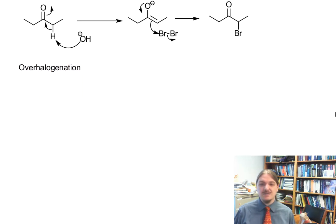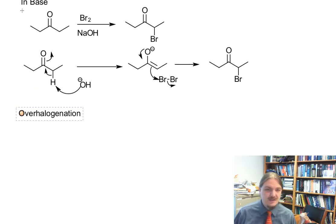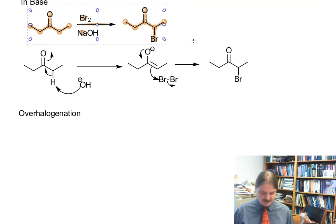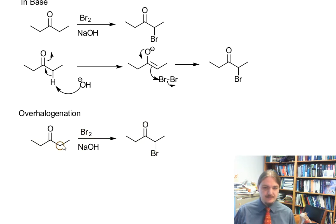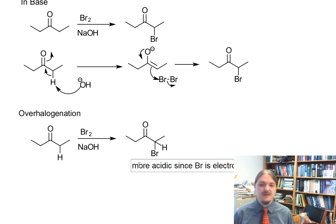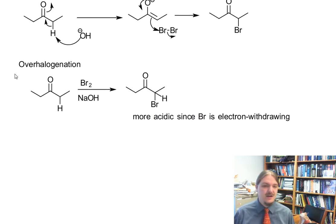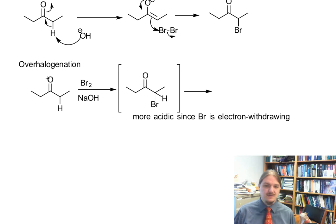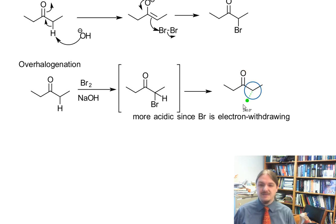There is a concern with this variation, and that is overhalogenation. If we look at our initial reaction, we have a bit of trouble in that the product is more acidic since bromine is electron withdrawing. That means it is very difficult to avoid overhalogenation, and if it occurs, it's going to occur on the same position, so the second bromine ends up on the same carbon as the first.